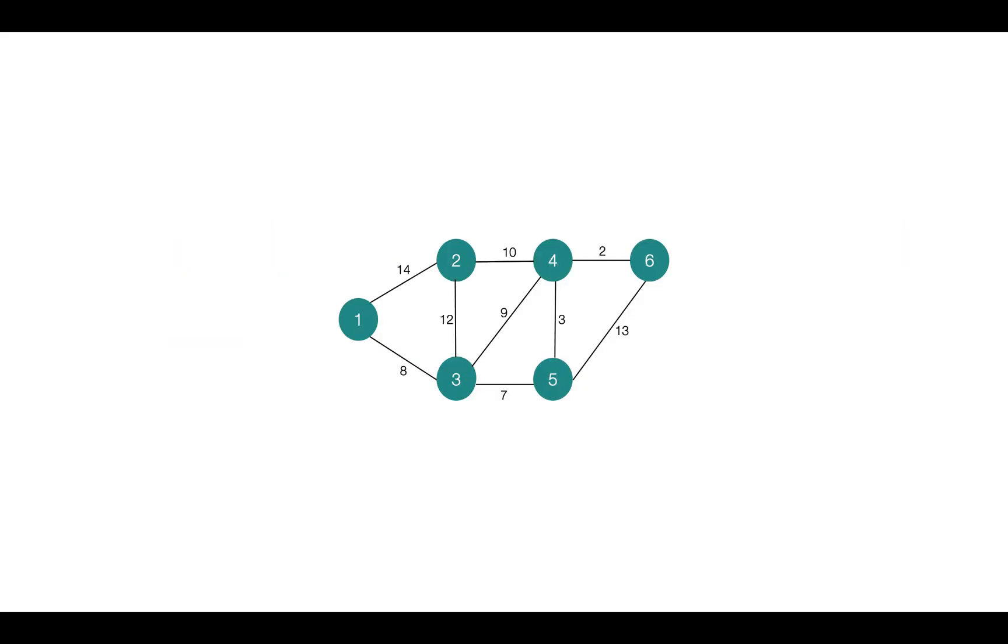Now let's see a few subgraphs of this graph and observe if they are spanning trees or not. Is this a spanning tree? No. Because this vertex 5 is not there in the main component. That's why it's not a spanning tree.